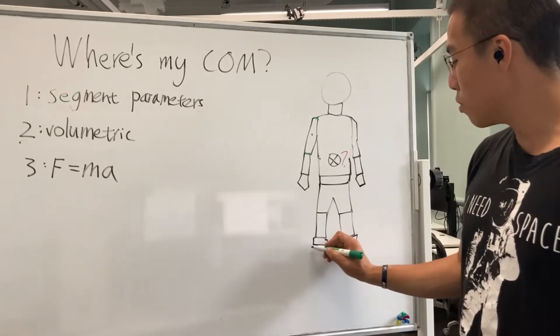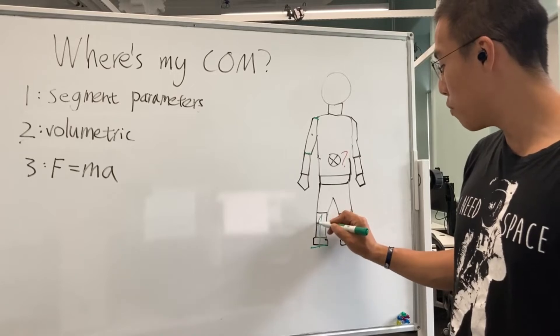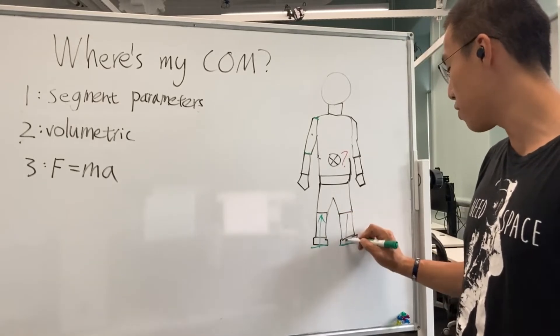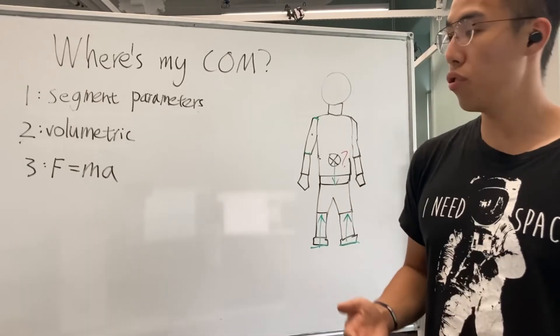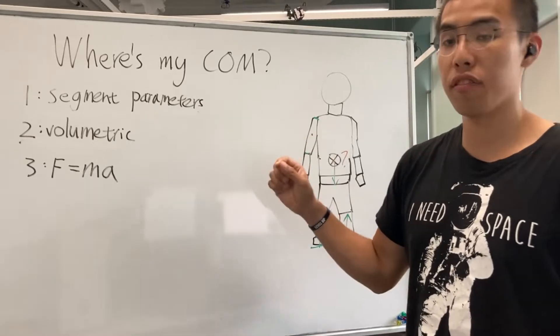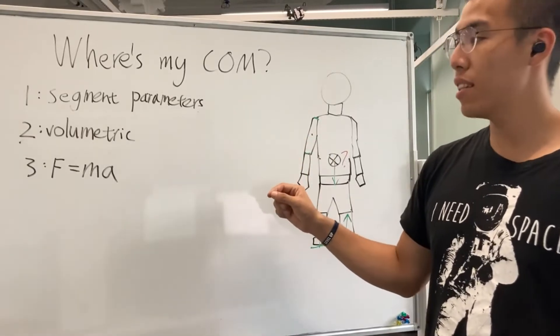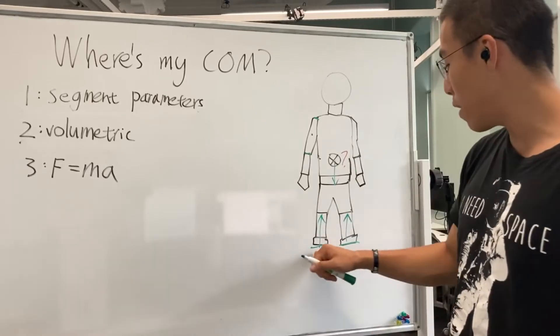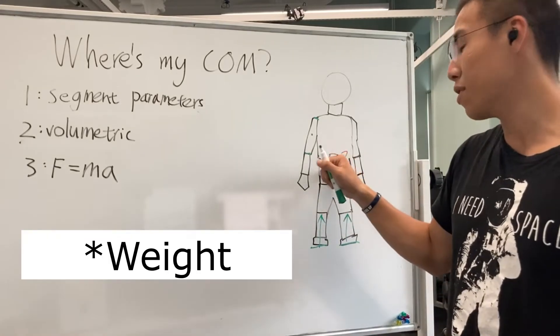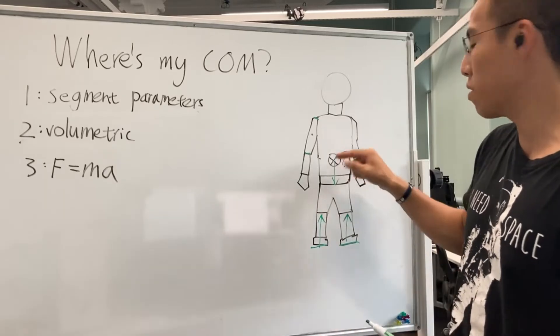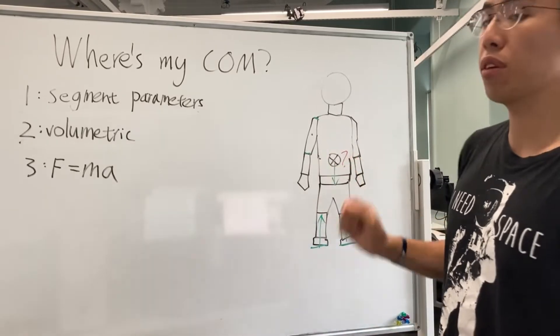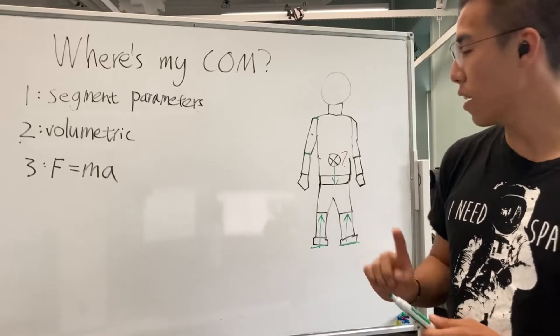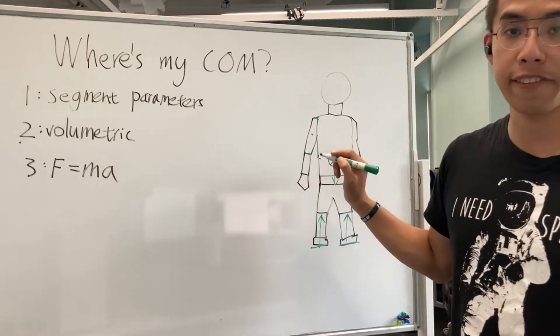A third method is using Newton's laws by measuring using the force plates to get the trajectory of your center of mass. This works because Newton's laws tells us how the movement of our center of mass is dictated by the net force acting on it. So once we know the ground reaction forces minus the center of mass to get the net force, then we can know where the center of mass is going. But this actually requires a starting position for your center of mass.